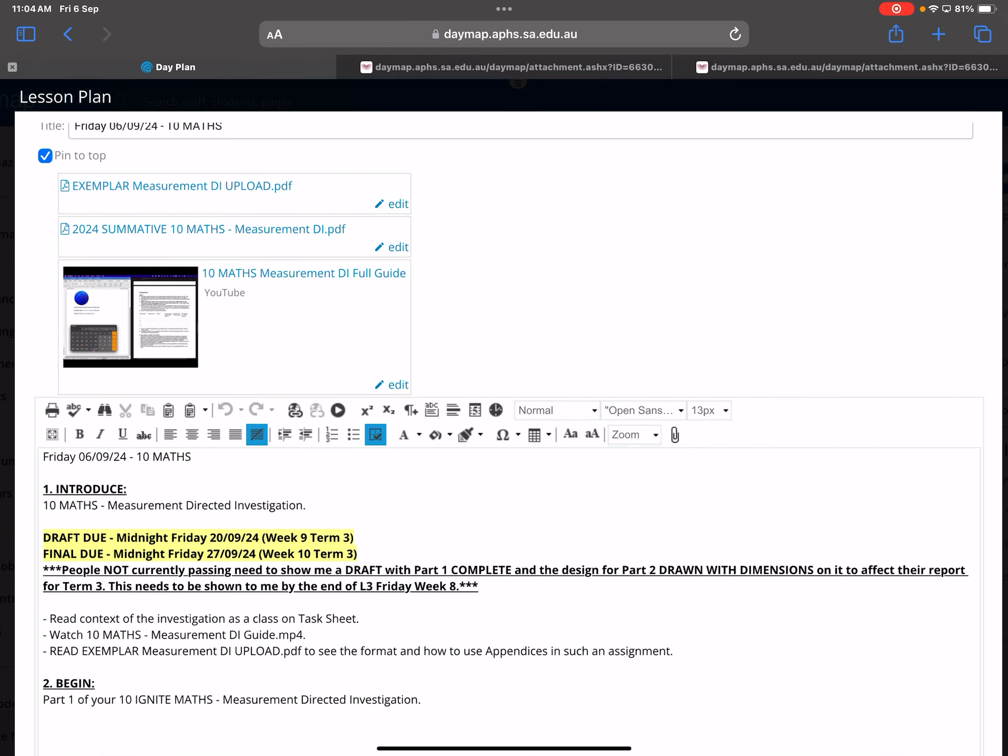You are doing an assignment that's to do with measurement. The draft is due midnight Friday of week 9. If you get me a draft by then, I will give you detailed feedback. If you know anyone from 10IG2, ask them what my feedback looks like. Ask them if that was a waste of time. I'm not going to bother giving you feedback or even marking your work if you don't get it into me on time.